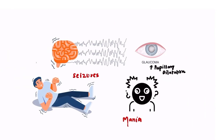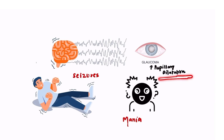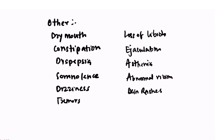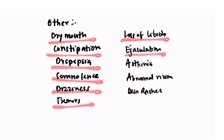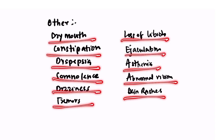Other side effects include seizures and glaucoma — paroxetine causes pupillary dilatation which can worsen glaucoma — and mania. The less important side effects are due to the anticholinergic effect of the drug. These include dry mouth, constipation, dyspepsia, somnolence, dizziness, loss of libido, ejaculation problems, asthenia, abnormal vision, and skin rashes.